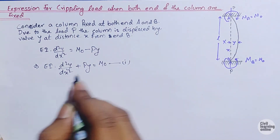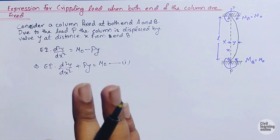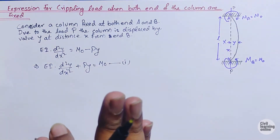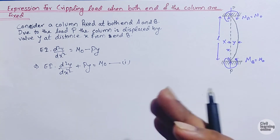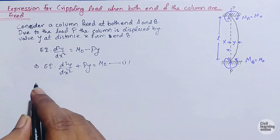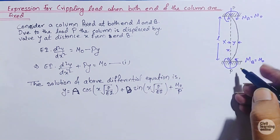We now need to find the general solution of this differential equation, which comes from engineering mathematics. The general solution is: Y = A·cos(x√(P/EI)) + B·sin(x√(P/EI)) + M0/P, where A and B are constants of integration. The boundary conditions are: x=0, y=0; x=L, y=0; and at x=0, dy/dx=0.